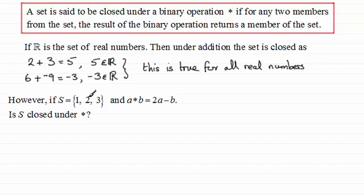Well let's say I take two members from this set S. Let's say I do 2 star with 1. Then according to the rule, it's going to be twice the first member, so that's going to be 2 times 2, minus the second member, this case 1. So we end up with 4 minus 1 equals 3. And I can see that 3 is a member of that set. So 3 belongs to the set S. So it looks closed.